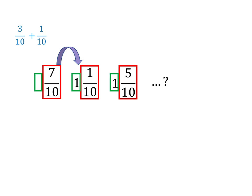So to get from 7 tenths to 1 and 1 tenths, we need to add 4 tenths.